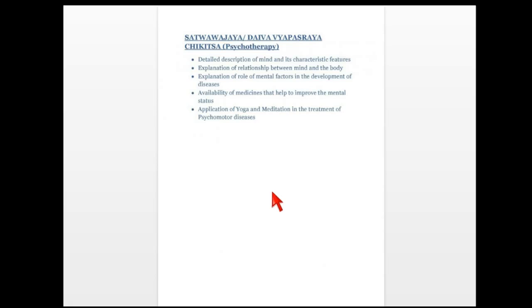The Ayurvedic management of gastric disorders includes a holistic approach considering all these factors, including mental factors. There is a special branch of Ayurvedic treatment that concentrates on improving the mental state of the patient — called Satvavajaya Chikitsa, a kind of psychotherapy in Ayurveda. This branch describes the detailed character of the mind, its features, and how mental factors develop into diseases in the body.